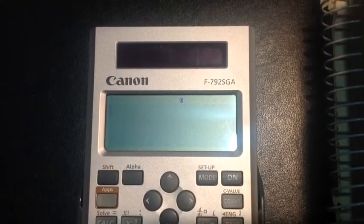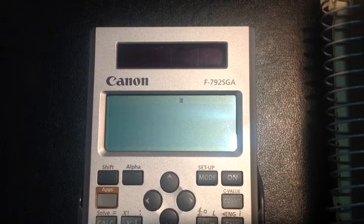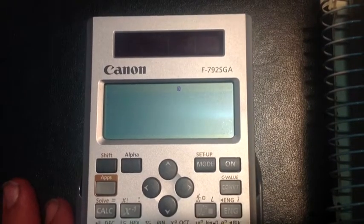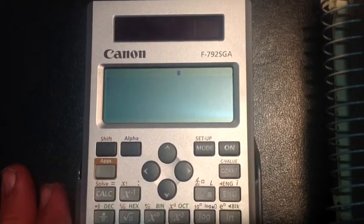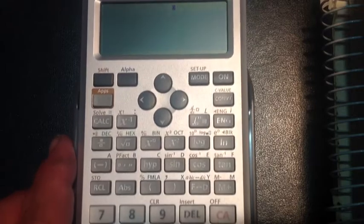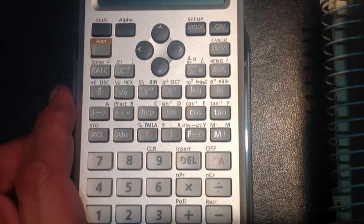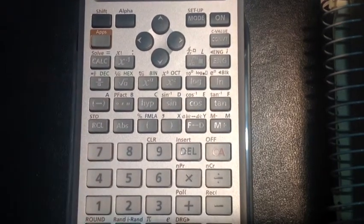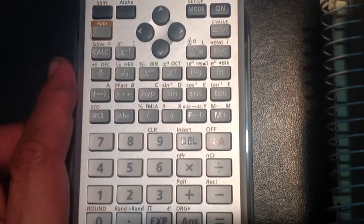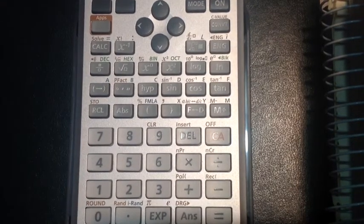The Canon F792SGA is one of the newer calculators in the Canon lineup. As you can see, the layout of the keyboard is similar to most scientific calculators that you can buy in the store today.